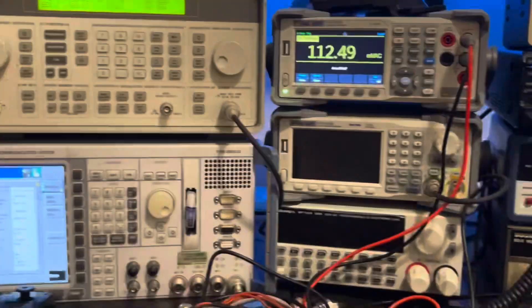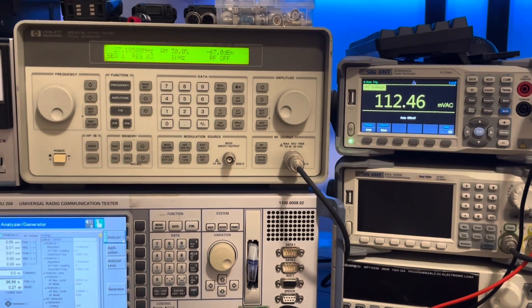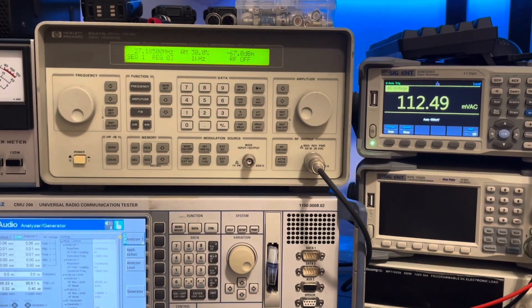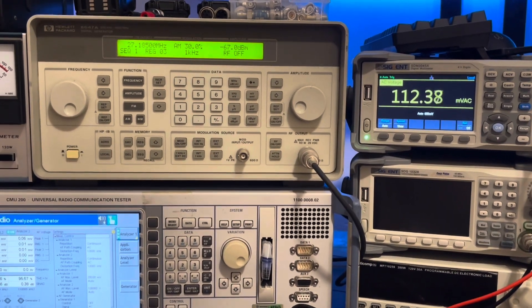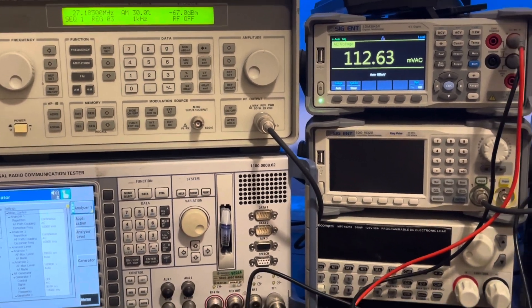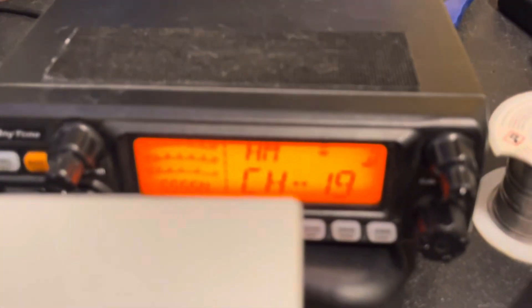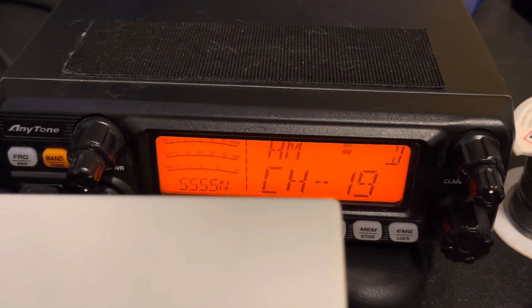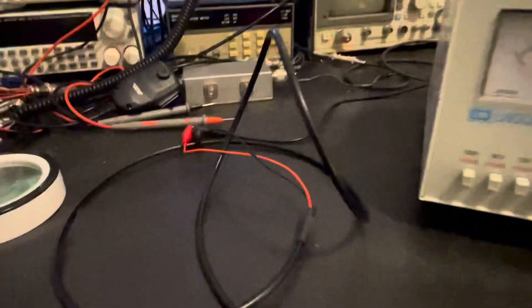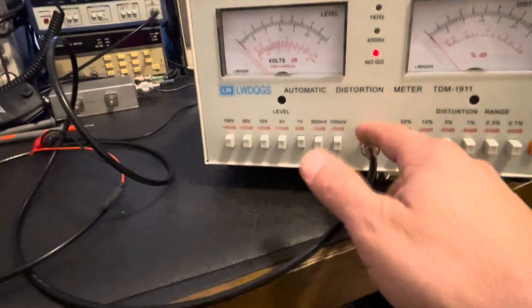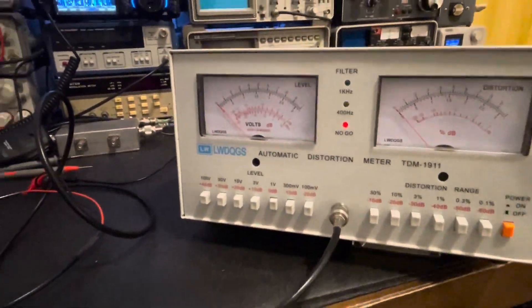What we're doing is we're using the HP 8647A RF signal generator. Right now we're generating a one kilohertz tone at minus 67 dB, and we're putting that tone into this AT-555. We're looking at the speaker output which is going here, and then we're feeding that into the TDM-1911, and then we'll feed it into the CMU 200 and just compare the two.